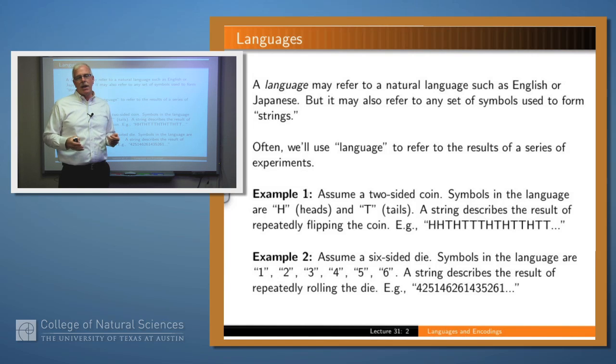But anyway, strings in this language then are just sequences of H's and T's or however you represent them. A second language is, suppose you've got a six-sided die and you're rolling that. Well, here you've got more symbols, right? You've got six symbols, whatever is marked on the six sides of the die, so it's probably one through six. And then a string in the language is just sequences of those symbols.